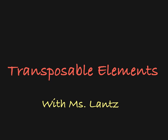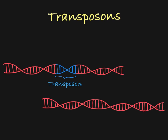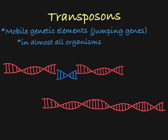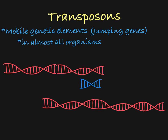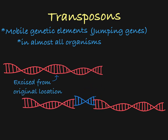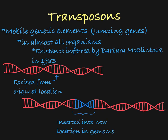In this video, I will discuss the structure and function of transposable elements, which I will also refer to as transposons. Transposons are mobile genetic elements which can be found in almost all organisms. They are often referred to as jumping genes because they can move seemingly at random around a genome, jumping from one location to the next in the DNA. Their existence was inferred by Barbara McClintock, for which she received the 1983 Nobel Prize in Physiology or Medicine.